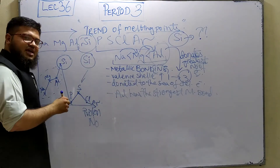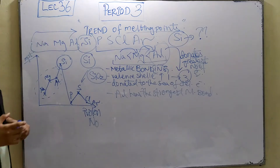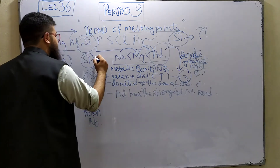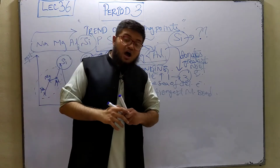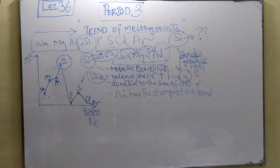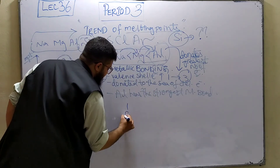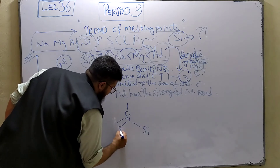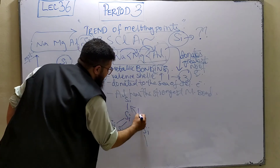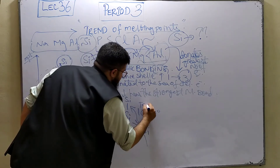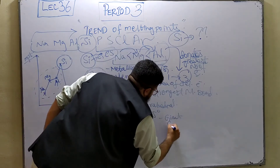Remember a compound of silicon we did previously in covalent bonding? Silicon dioxide, SiO2, has a giant covalent structure. The same is the case with silicon — silicon also has a giant covalent structure. In silicon, each silicon atom is bonded to four other silicon atoms, which in turn are bonded to four more silicon atoms. This gives a tetrahedral structure with a bond angle of 109.5 degrees.